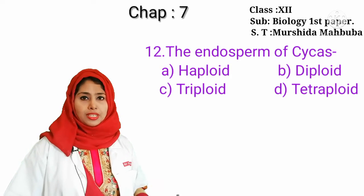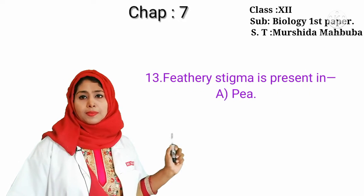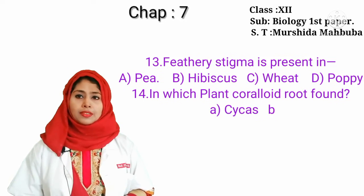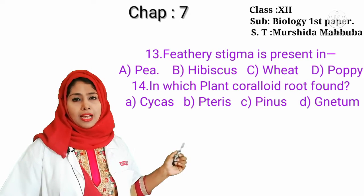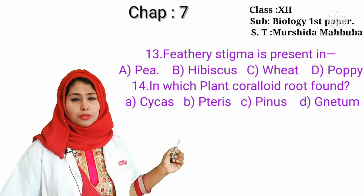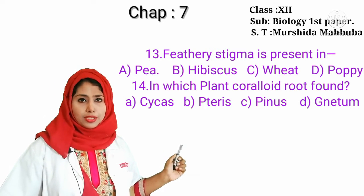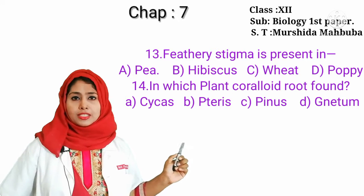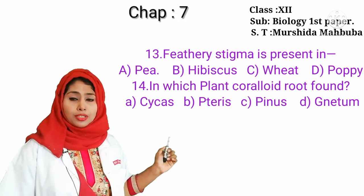Our next question: feathery stigma is present in which plant — Hibiscus, wheat, or poppy? Wheat is a plant under the Poaceae family, so feathery stigma is present in the Poaceae family. The correct answer is wheat.